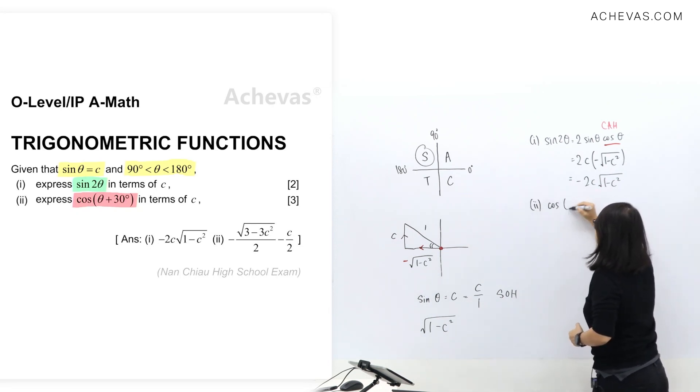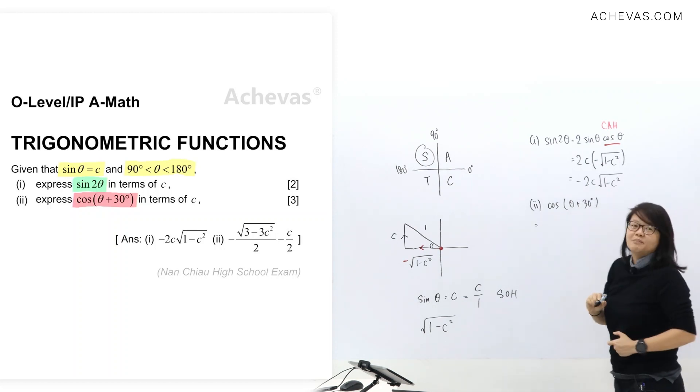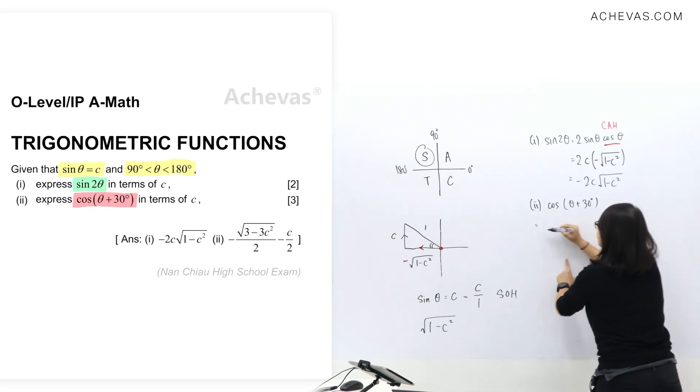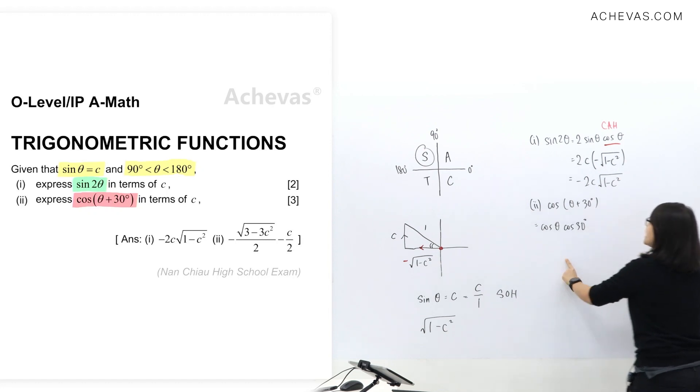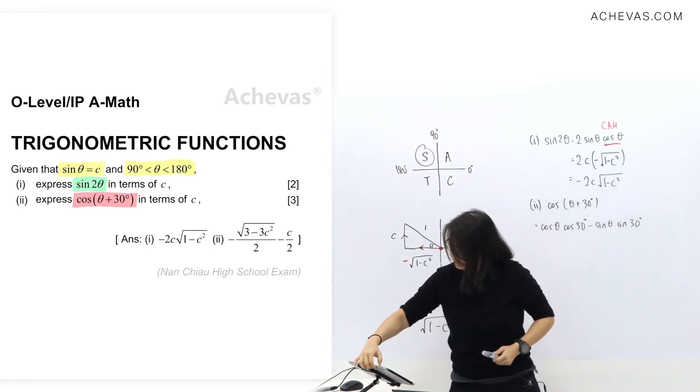We have cos theta plus 30 degree. And making use of the formula that I have flashed just now, I'm going to take cos theta, cos 30, and opposite of this sine is minus sine theta and sine 30 degree. Now, let's just show you the formula again.